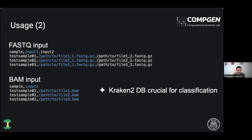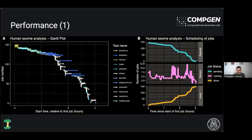The inputs can be either raw reads with a FASTQ input or already pre-aligned BAM files coming from another pipeline. The database for Kraken is crucial for the classification because the whole point of the pipeline is assigning a taxonomic classification to the unmapped reads. The way the Kraken database has been built will obviously have a huge effect on the results and the taxonomic IDs you're able to detect.